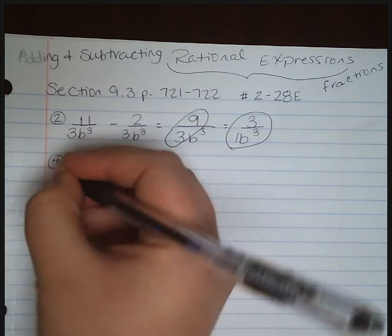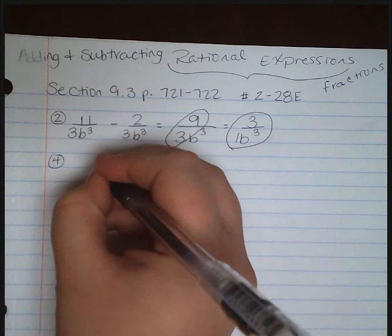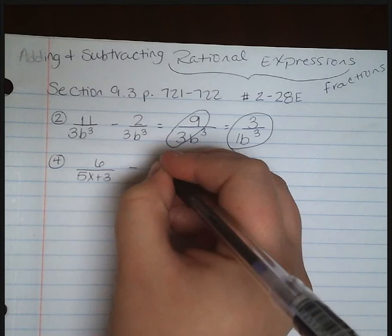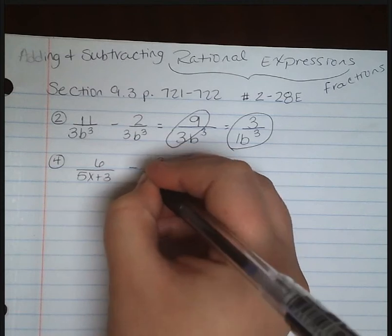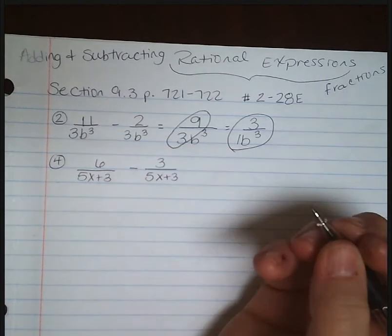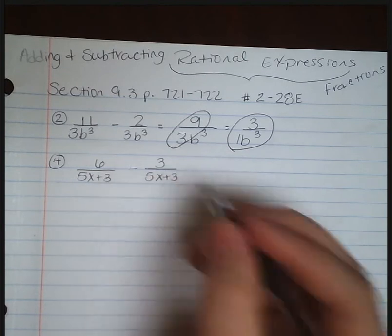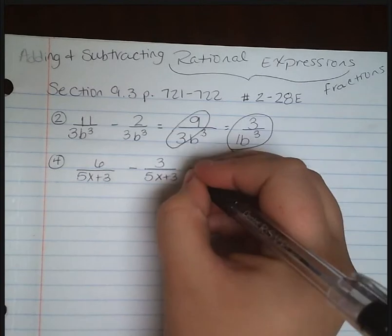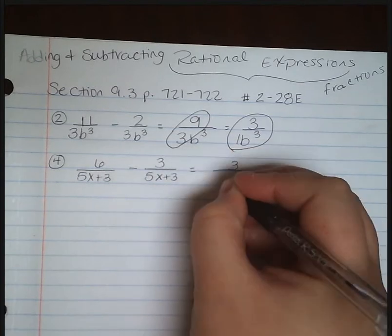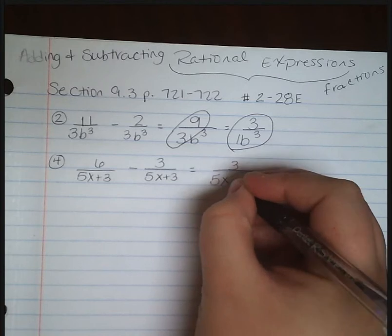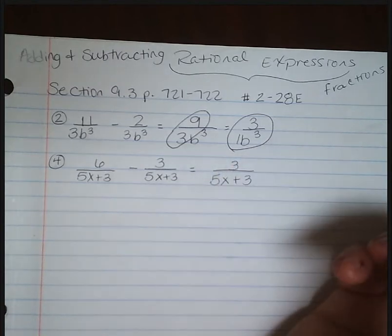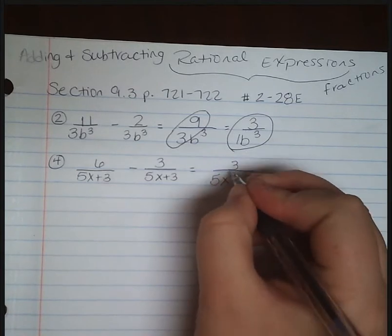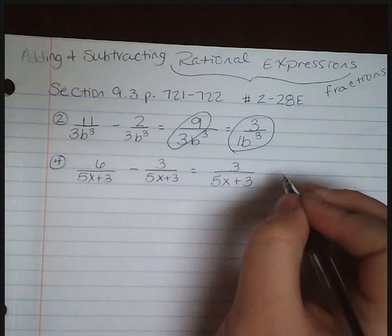Moving on to problem number 4. We have 6 over 5x plus 3 minus 3 over 5x plus 3. We notice that we do have a common denominator of 5x plus 3, so we can go ahead and subtract. 6 minus 3 is 3, keep your same denominator of 5x plus 3.